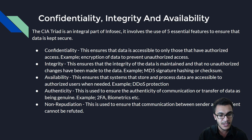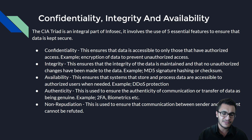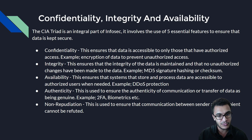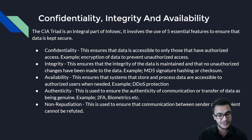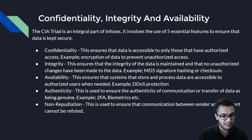The next security feature is availability, which ensures that systems storing and processing data are accessible to authorized users when needed. Examples include DDoS protection and load balancing. You're trying to make sure that required data is available to authorized individuals when they need it — for instance, clients accessing a popular web application to perform transactions.